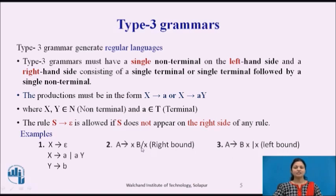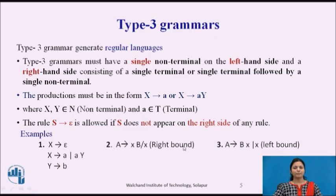When the non-terminal B is on the right-hand side, it is called right-bound. When the non-terminal is on the left-hand side, it is called left-bound.